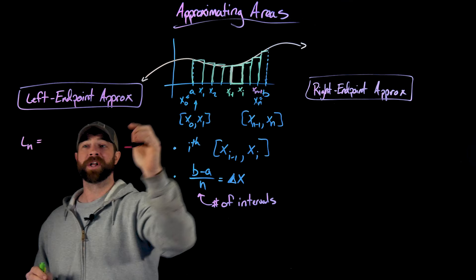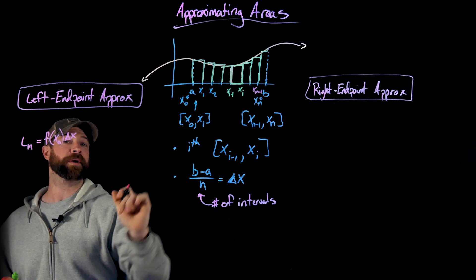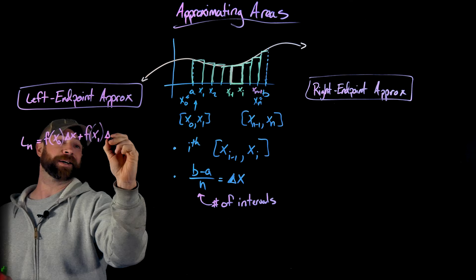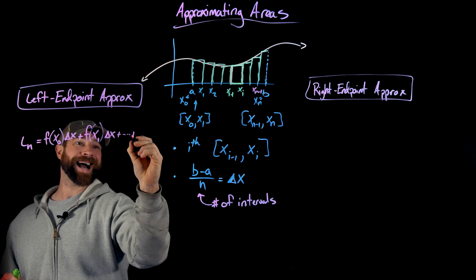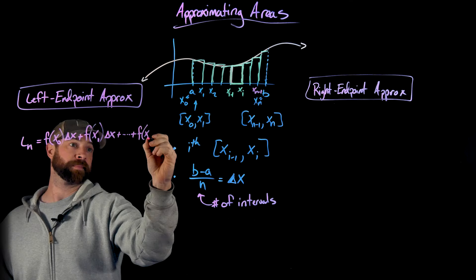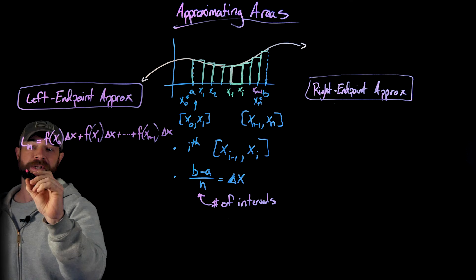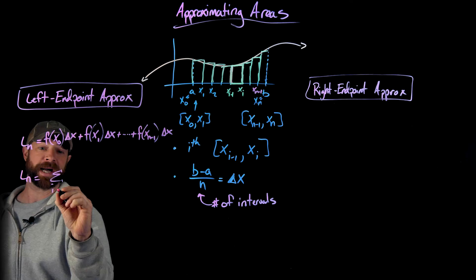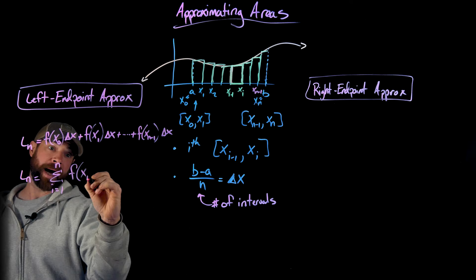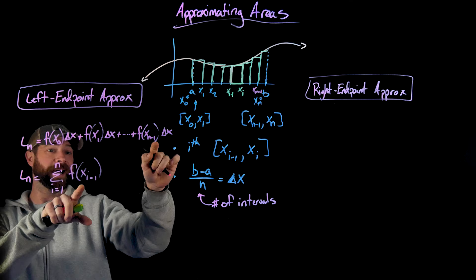L sub N is found by adding all the rectangles. The first rectangle has height F of X sub zero times delta X, the second is F of X sub one times delta X, and the last rectangle has height F of X sub N-minus-one times delta X — the left-hand side of that last interval. Using sigma notation, L sub N equals the summation from I equals one to N of F of X sub I-minus-one times delta X. When I equals one, we get X sub zero, and when I equals N, we get X sub N-minus-one.